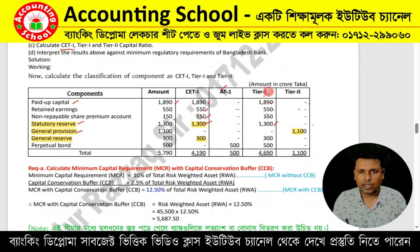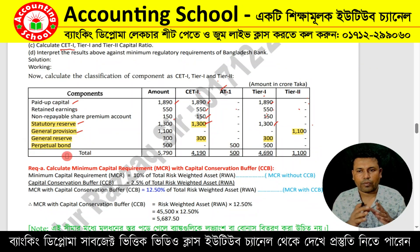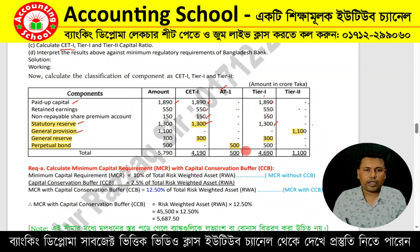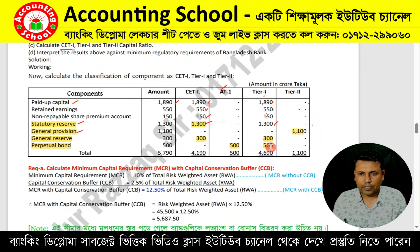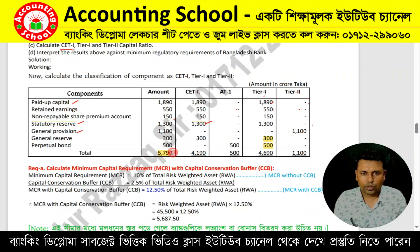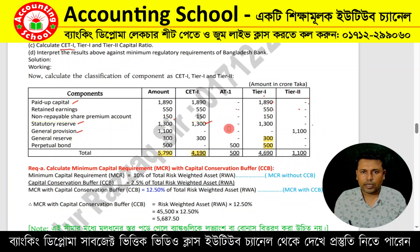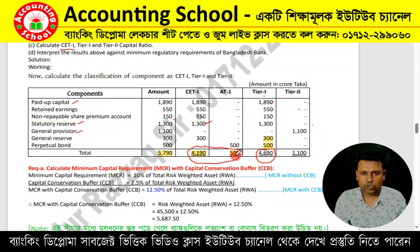Let's start with CET1. The perpetual bond is a zero-coupon bond — it has no fixed maturity, so it qualifies as Additional Tier 1. After computing all components, total capital is 590 and CET1 is 490.